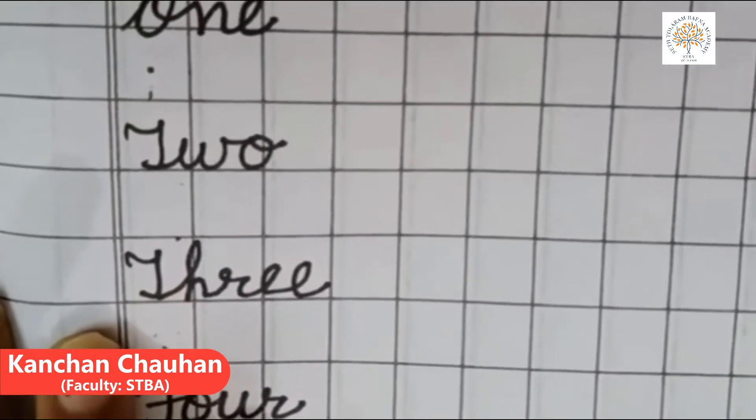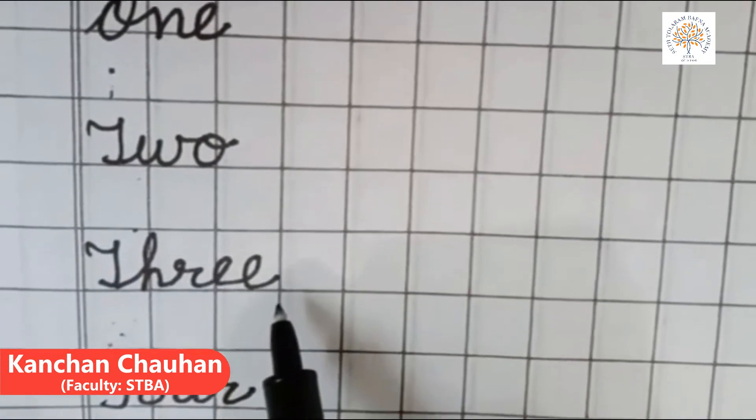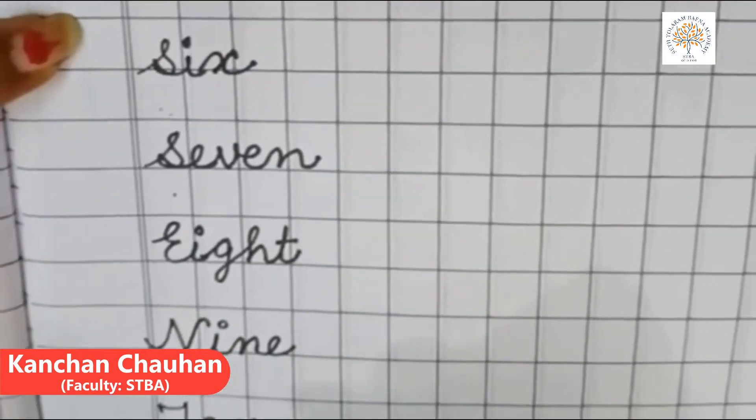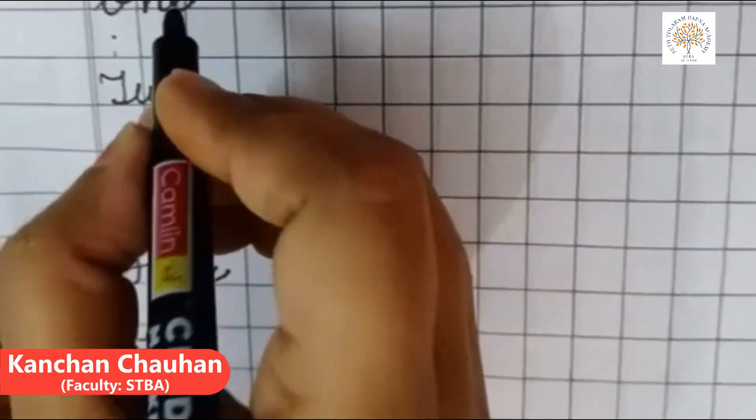Children, after learning number names, you can write numerals for these number names. These are number names: 1, 2, 3, 4, 5, 6, 7, 8, 9, 10. I have these number names and now we will write their numerals.